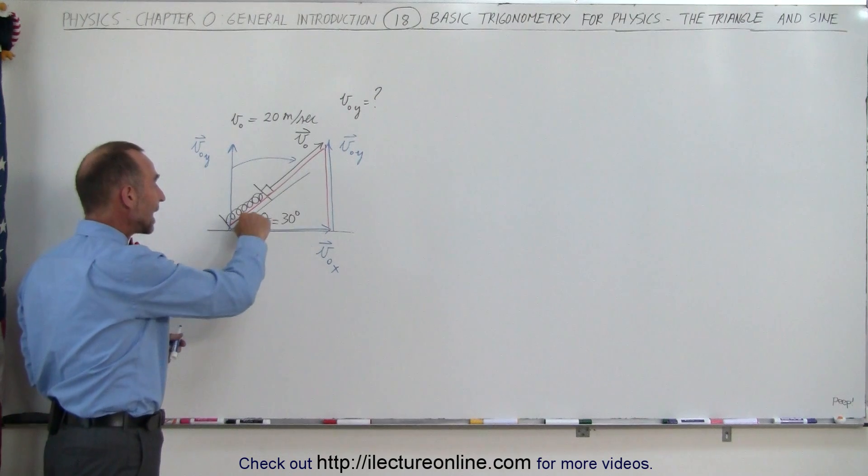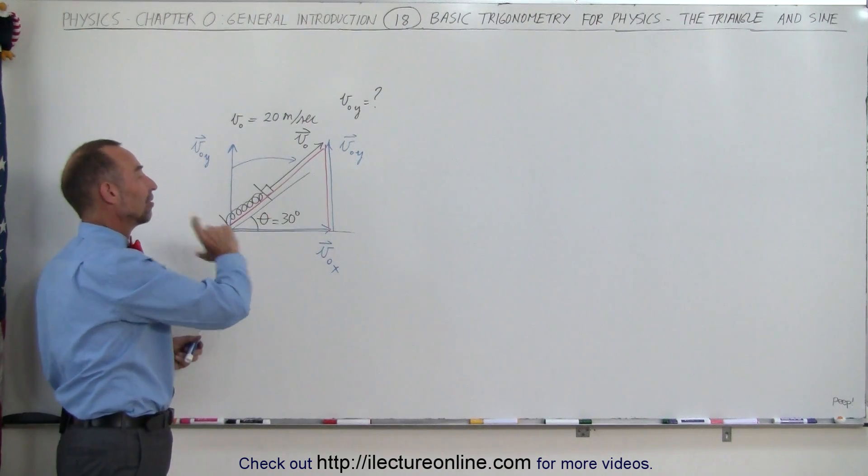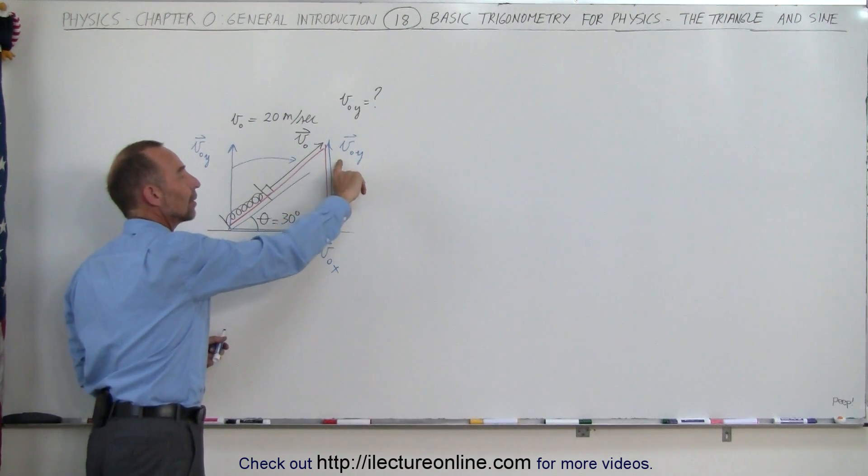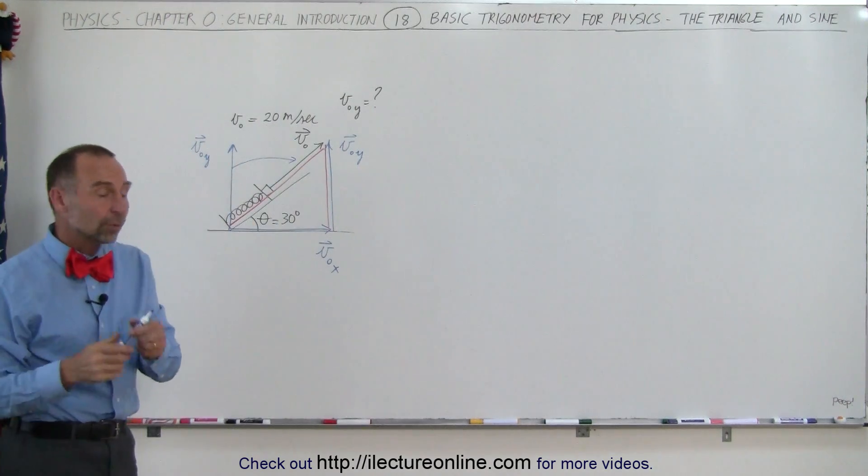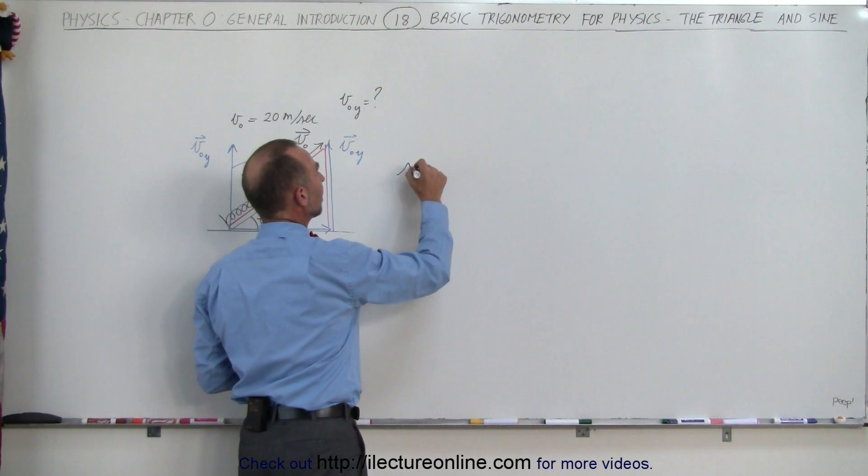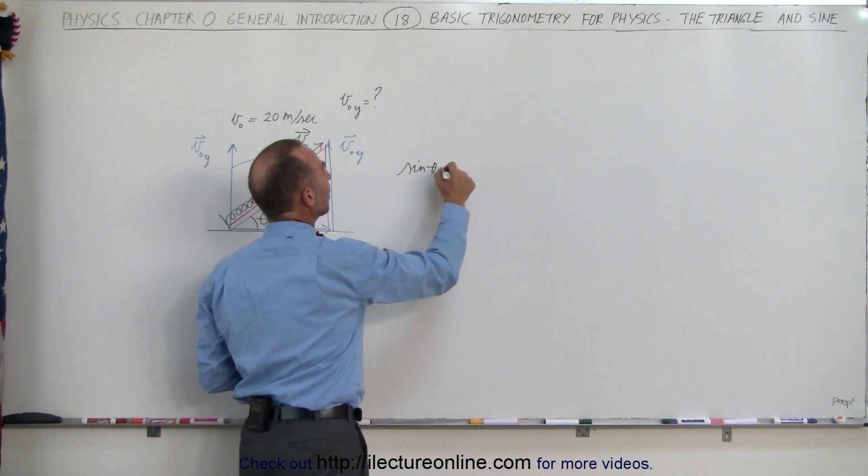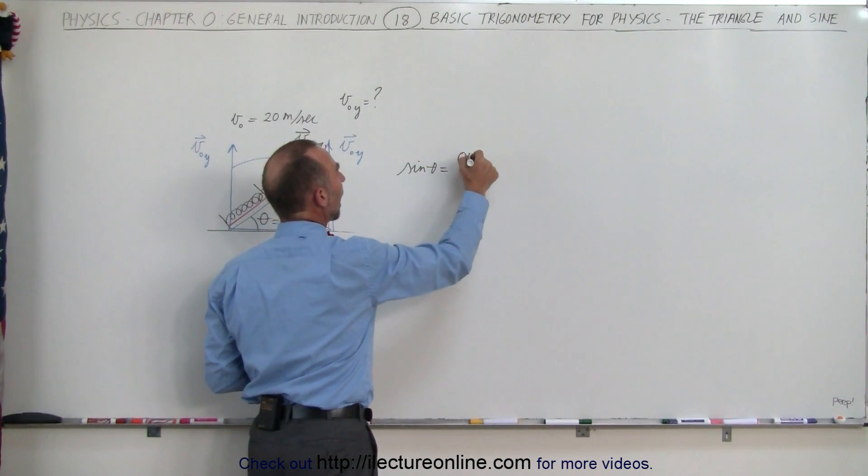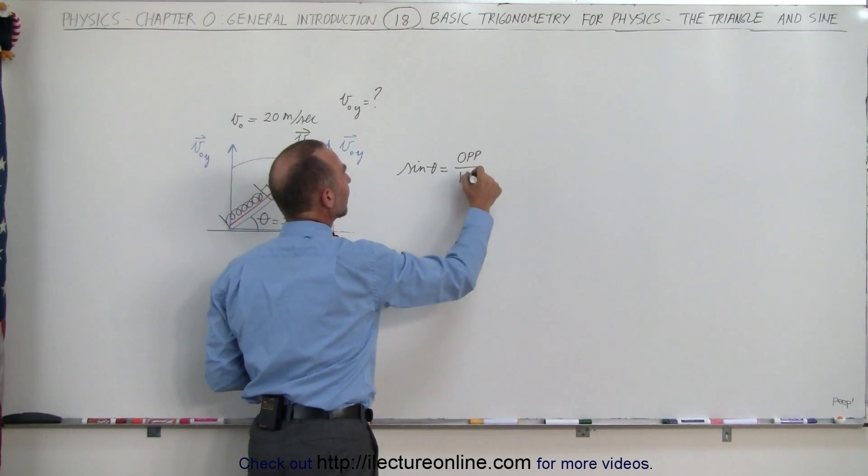Now you realize that the angle theta is right here. And then you have to recognize that this side right here is opposite to the angle. And then also realize that the definition of the sine of the angle, the sine of the angle theta, is equal to the ratio of the opposite side divided by the hypotenuse.